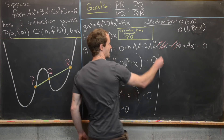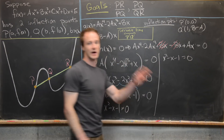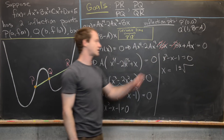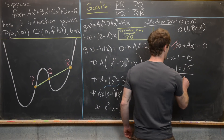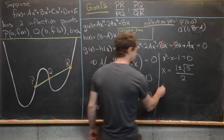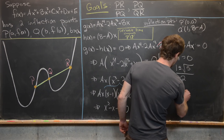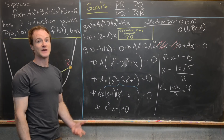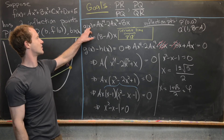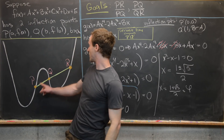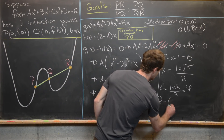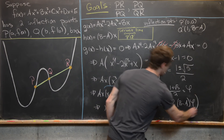Using the quadratic formula on x² − x − 1 = 0 gives x = (1 ± √5) / 2. We keep the rightmost root, which is x = (1 + √5)/2 — the golden ratio φ. The y-coordinate of R is obtained from the line: H(φ) = (B−A)φ. So R′ = (φ, (B−A)φ).